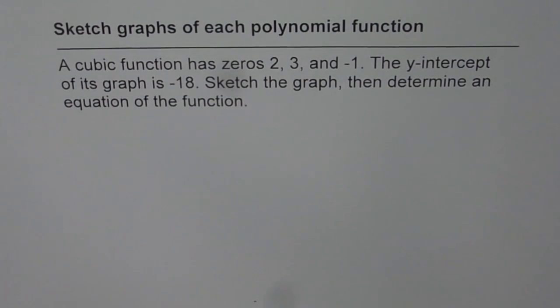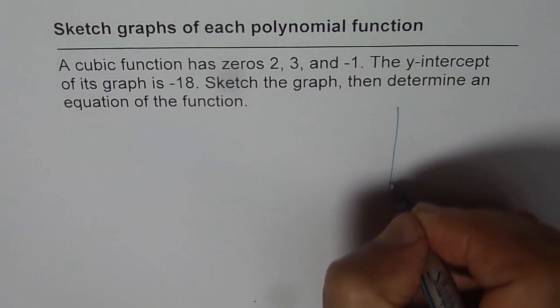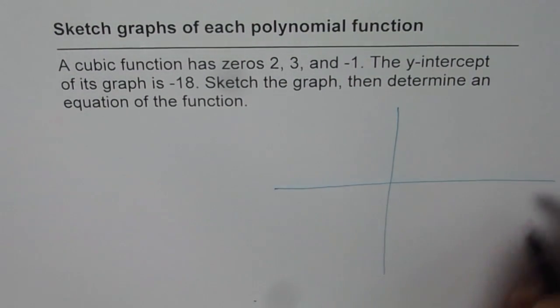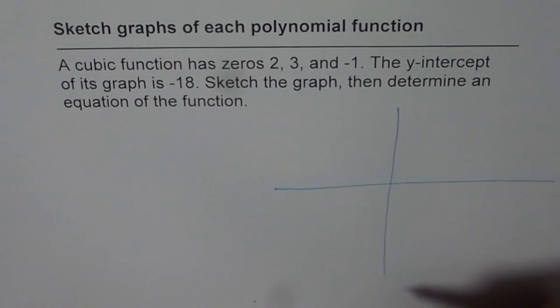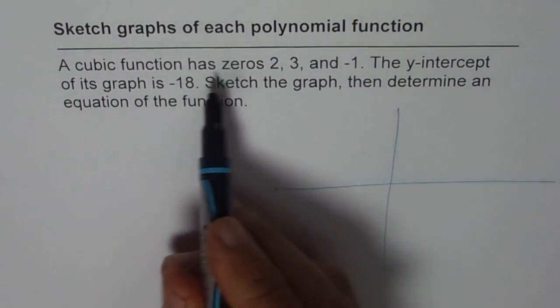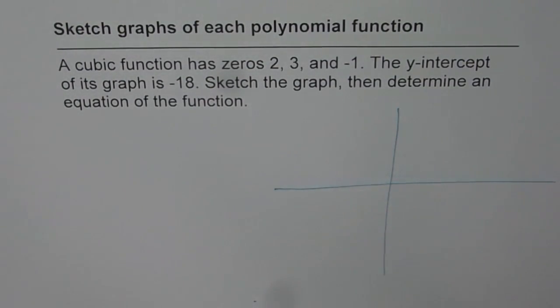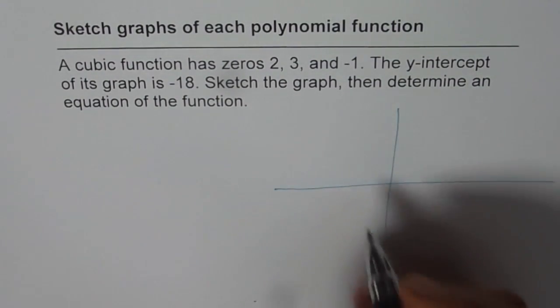So, let's do it. We'll sketch the graph here on the right side and then find the equation of this function. It says a cubic function has zeros, so there are three zeros. Let us say the zeros are at 2, 3, minus 1.